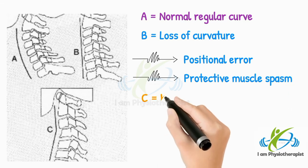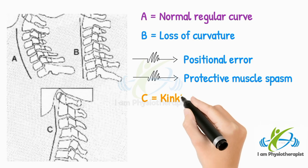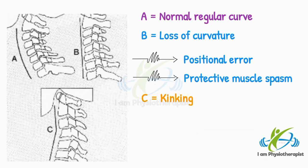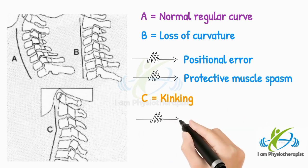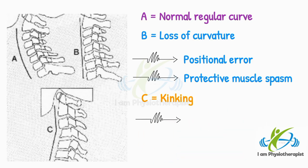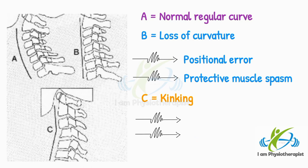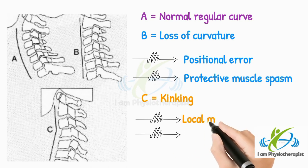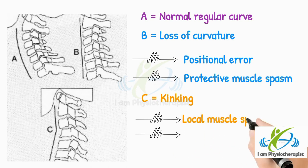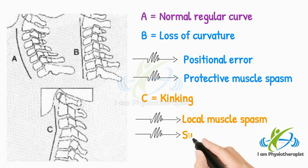Point C shows kinking, which may be due to a local lesion such as subluxation, or may be due to intense local muscle spasm.